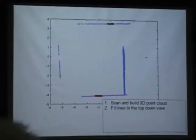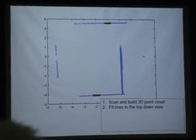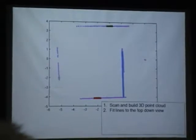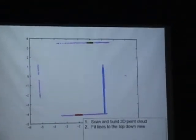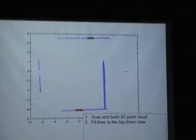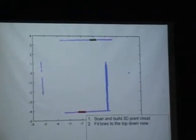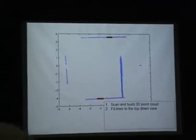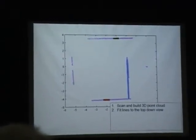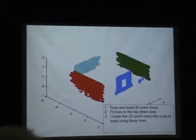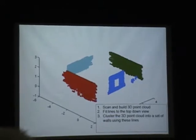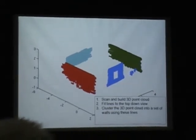If we look at the top view, we can easily extract the walls by fitting lines to cluster the points. Here we see the blue lines, the red lines, and the green lines are the extracted lines that fit those points. That allows us to cluster that point cloud into a set of walls.